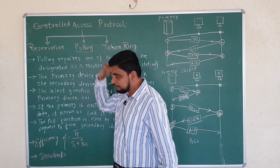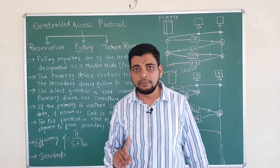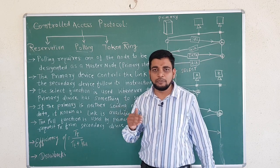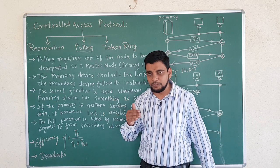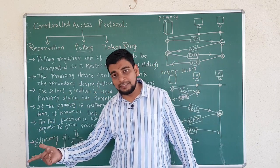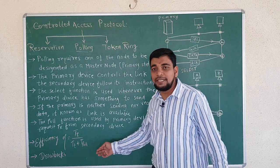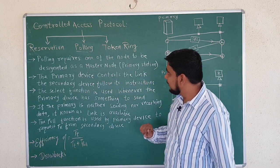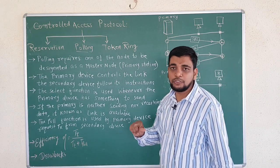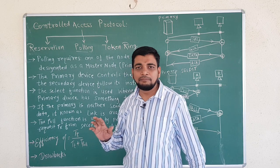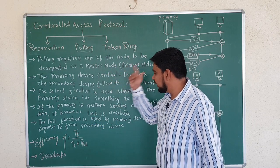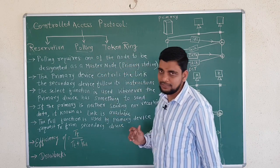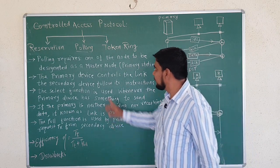There are two drawbacks of polling. The first drawback is polling delay — every time the primary node requests each secondary node before it can send information, this introduces polling delay. The second drawback is that when the primary device fails, the complete system becomes inoperative. If the master node fails, the entire system is disconnected and stops working.